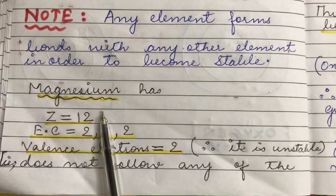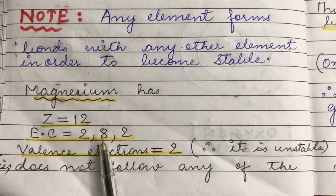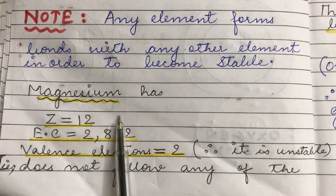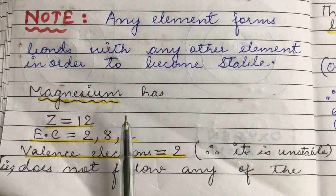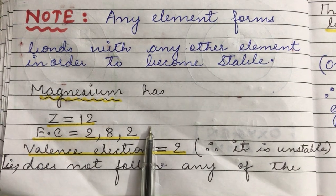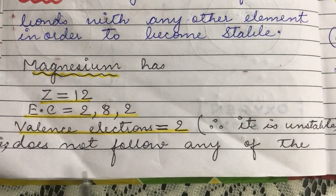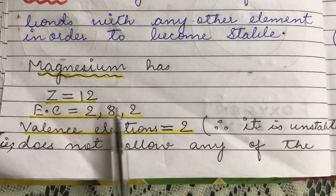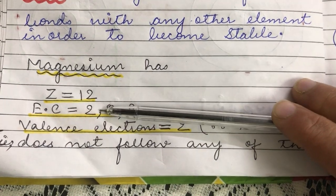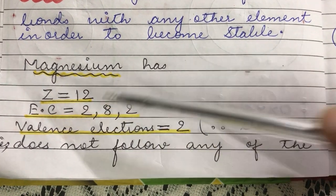Magnesium has an atomic number of 12 and its electronic configuration is 2, 8, 2. Since its atomic number is 12, it has 12 protons and 12 electrons, giving the configuration 2, 8, 2. It has two electrons in the outermost shell, making it unstable. For stability, any atom must have either 8 electrons in its outermost shell — the octet rule — or only one shell (the K shell) with two electrons, following the duplet rule.